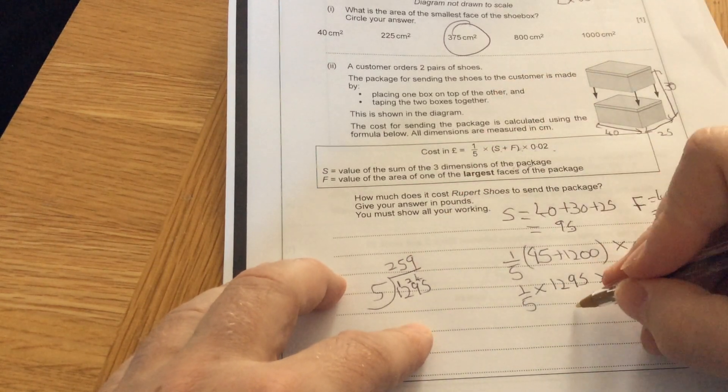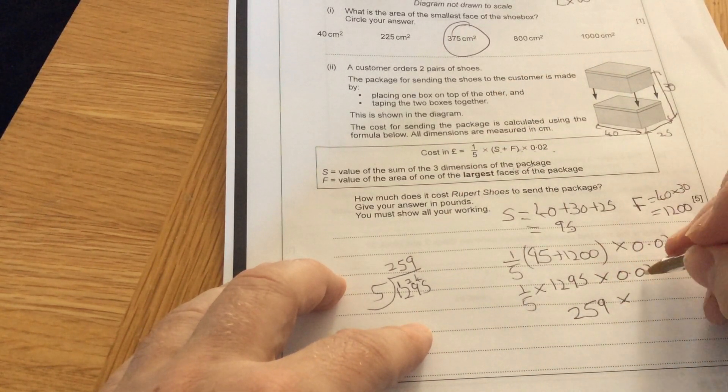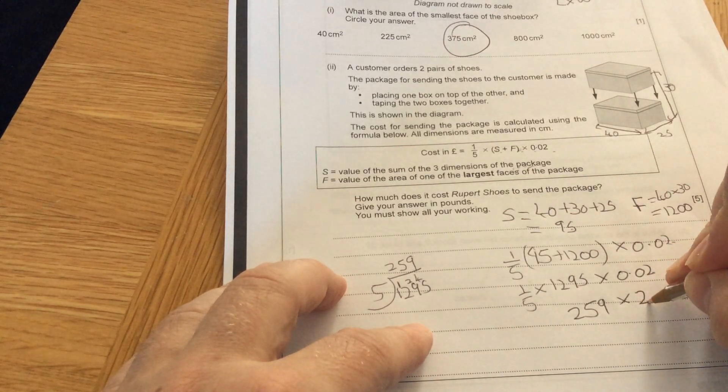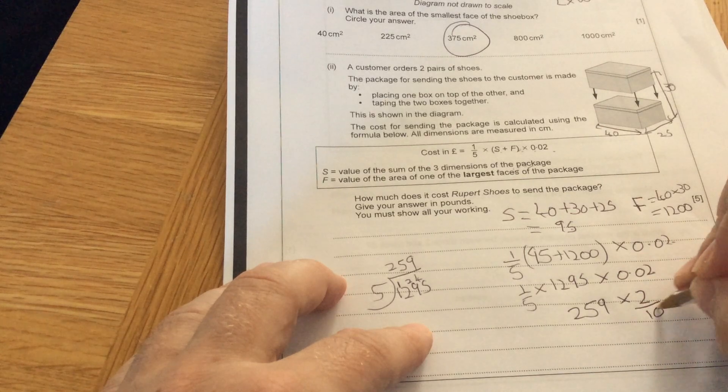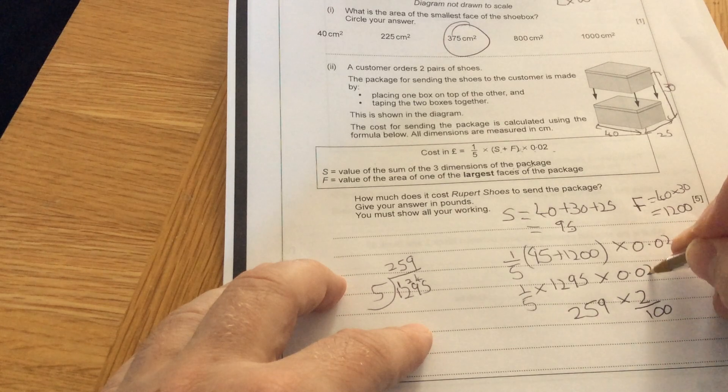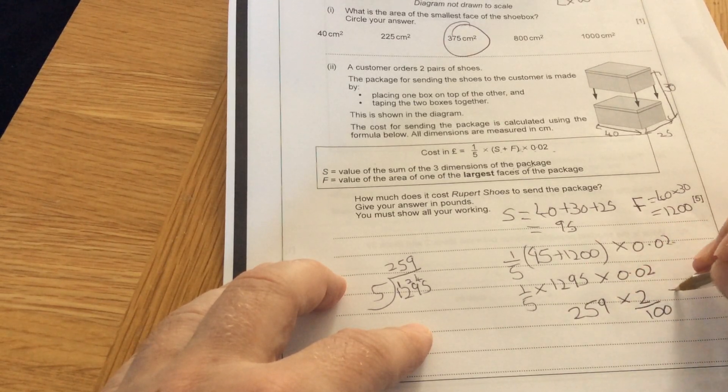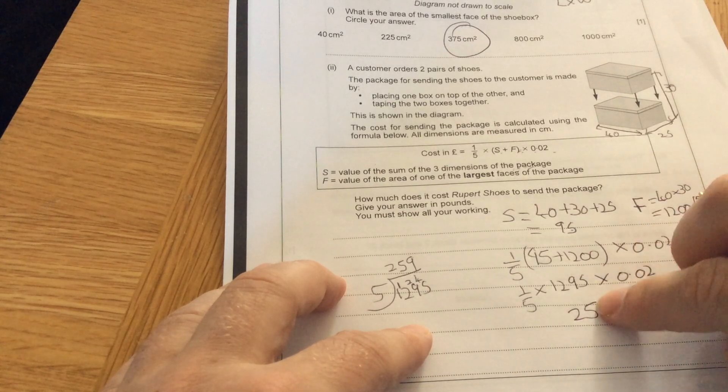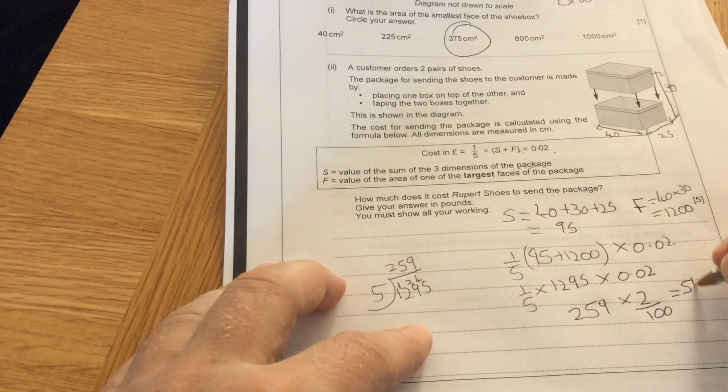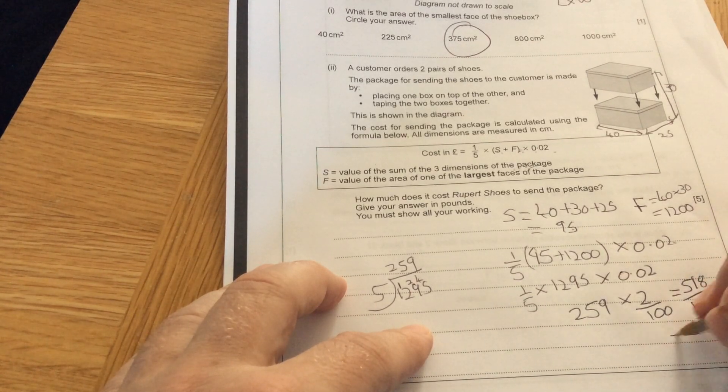259 times 0.02. What I would do is 0.02 means 2 over 100, because it's two hundredths. The first column is tenths, second column is hundredths. So I'll double it. Double 250 is 500, double 9 is 18. That's 518 divided by 100.